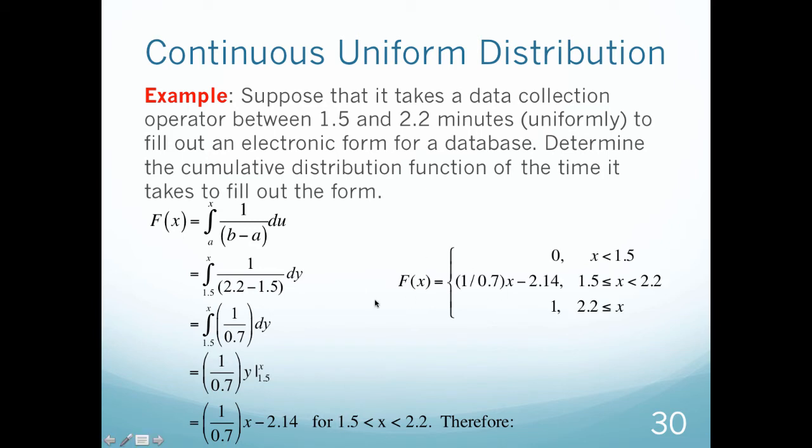That gives me this piecewise function. F of x is 0 when x is less than 1.5, it's this function when x is between 1.5 and 2.2, and it's the number 1 when x is greater than 2.2. It's not too bad. We know there's always 0 before my limits, the function within these limits, and then the value 1 when it's greater than this limit.